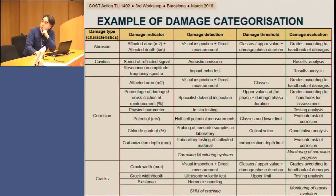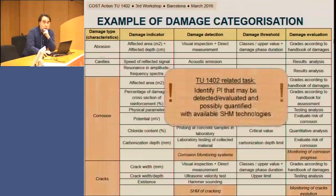As an example of damage categorization, the table presented groups damage types by characteristics to identify a damage indicator, damage detection method, damage threshold, and damage evaluation for each type. Within the scope of this COST Action, the aim is to use this categorization to identify performance indicators that can be detected, evaluated, and possibly quantified with available SHM technologies.